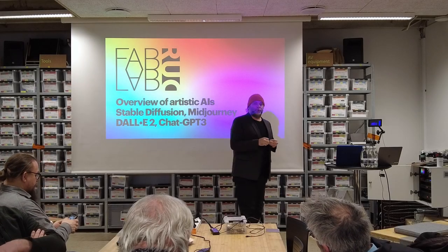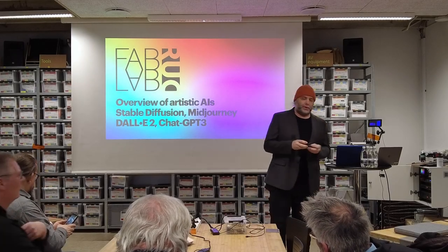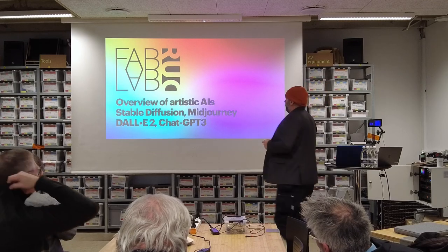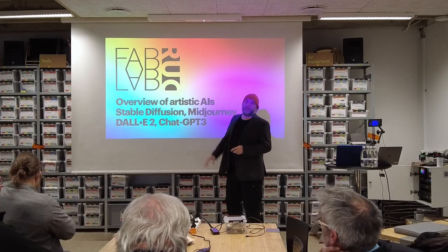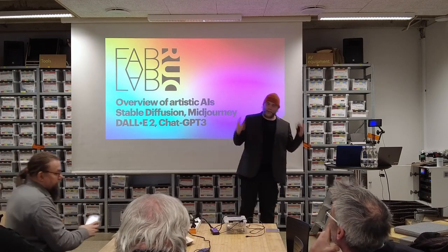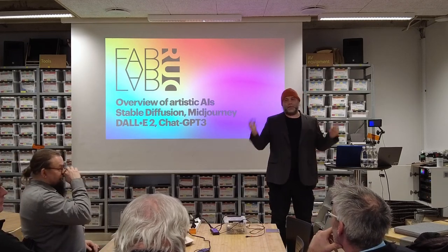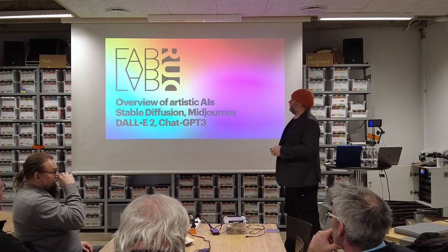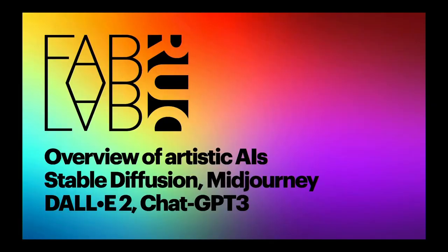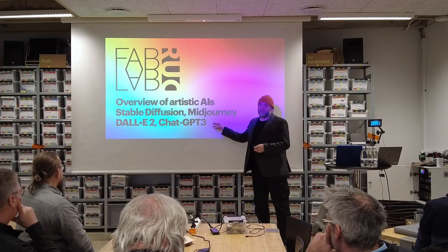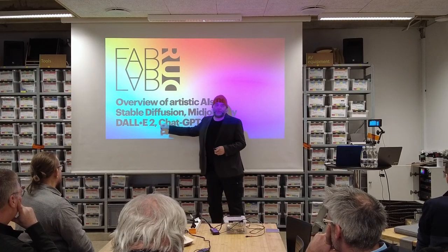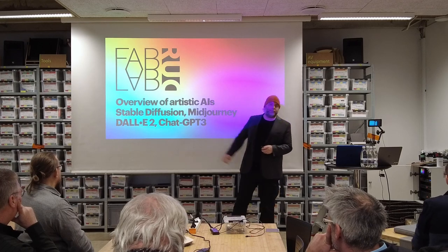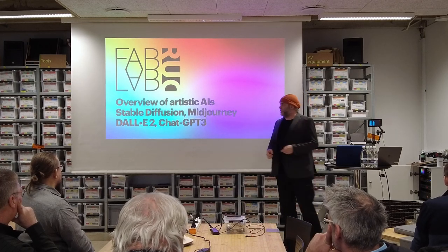I'm going to be showing you some beautiful art from our new robot overlord, especially talking about these artistic AIs that take text — you give them a prompt, you write something, and they generate a synthesized picture for you from the training base. There are three big ones at the moment: Stable Diffusion, Mid Journey, and DALL-E 2. And then there's ChatGPT-3, which is a text-based one — the DALL-E 2 uses the same engine as ChatGPT-3, just used for pictures instead.